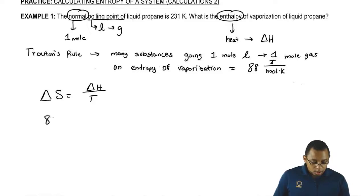We know this is 88 joules over moles times K. We're looking for delta H. Now we're going to say the temperature is the temperature I gave to you, 231 Kelvin.